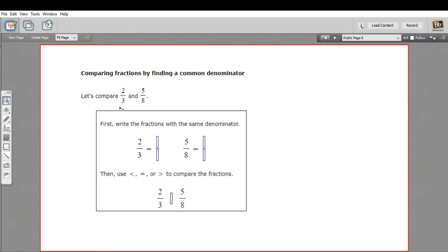In this problem, we're being asked to tell which one is bigger, two-thirds or five-eighths. So we've got two fractions, and the numerators are different, the denominators are different, and it's not clear, just looking at them, which one would be bigger. They're probably pretty close. So how do we do this?